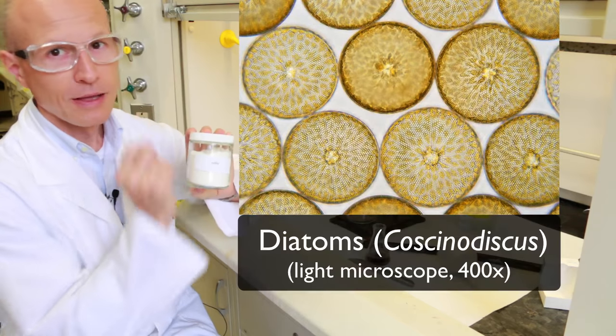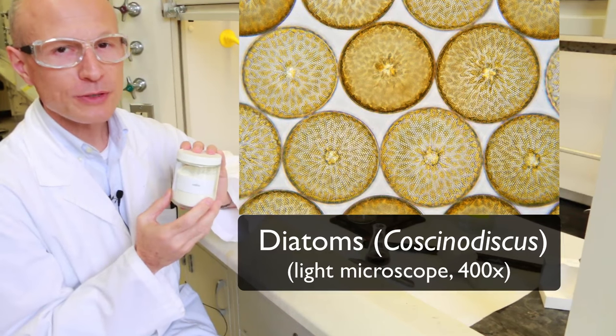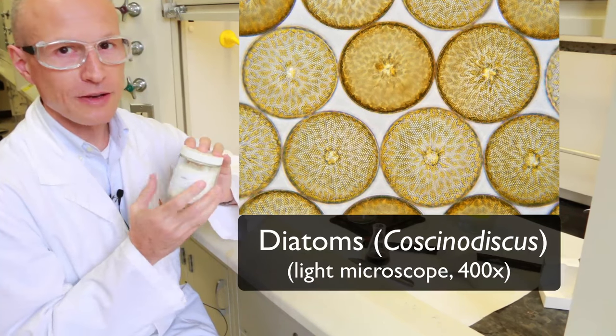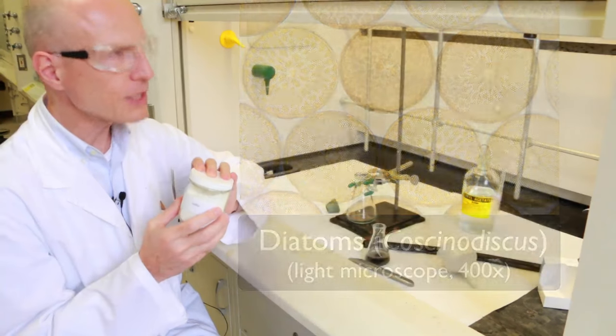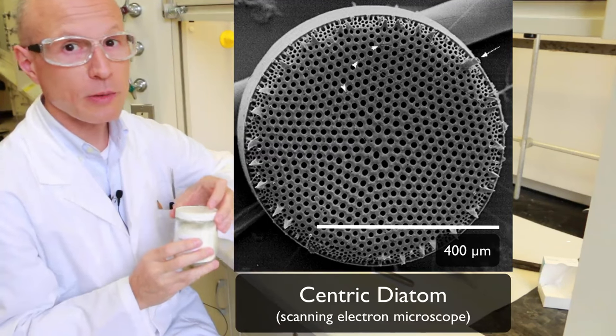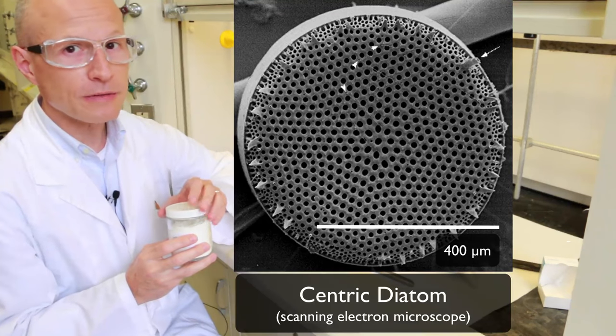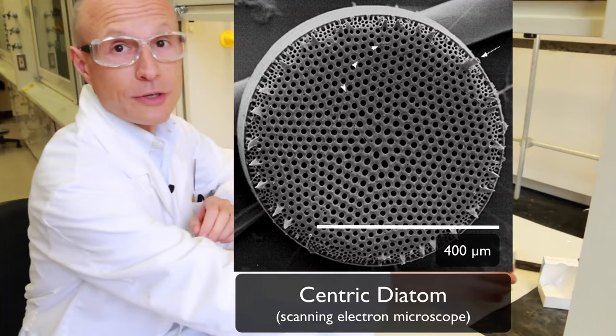Diatoms are phytoplankton which have a microporous calcium carbonate shell on the outside. You see all those little holes? Those are a lot smaller than the normal pores in your filter paper, so they will act as a sieve and aid your filtration.